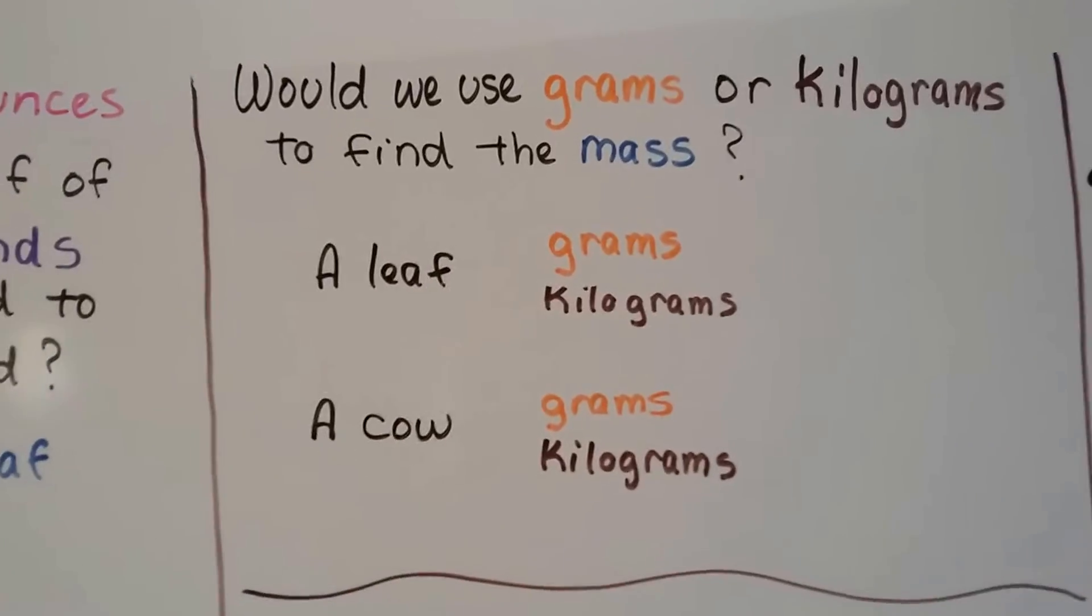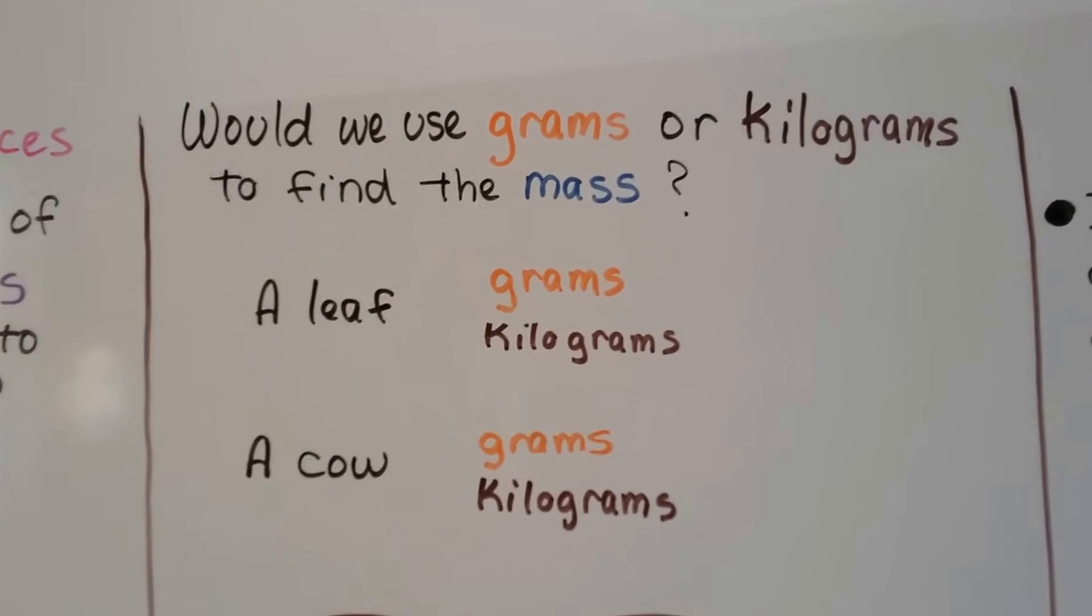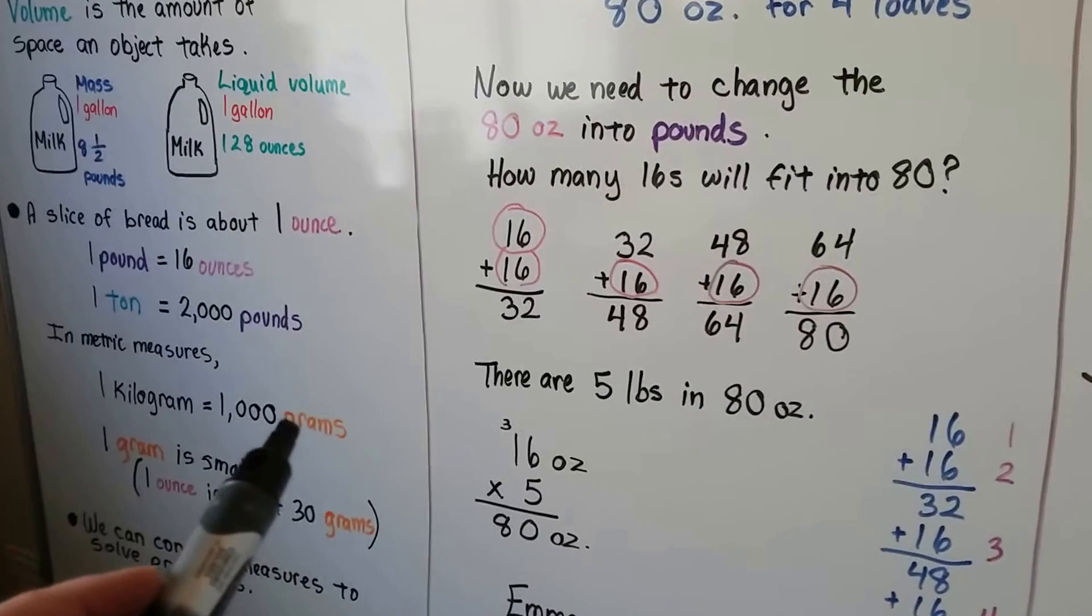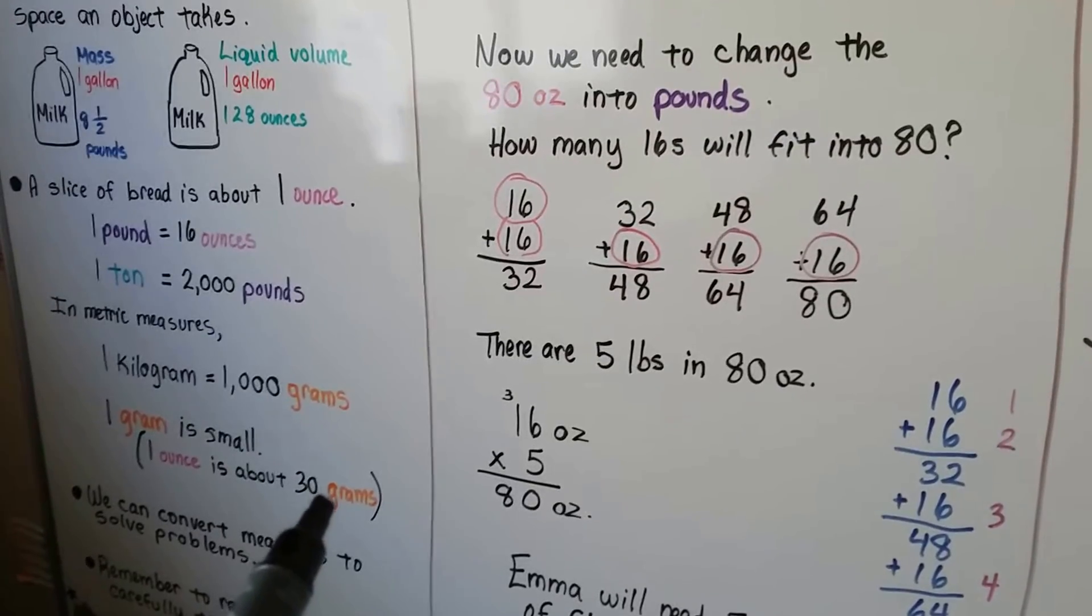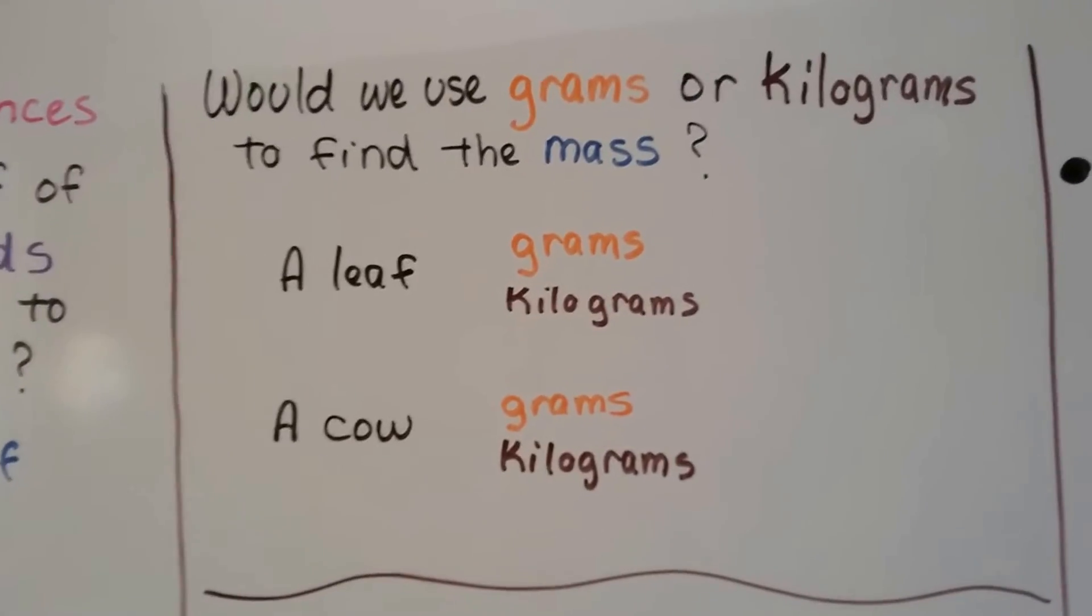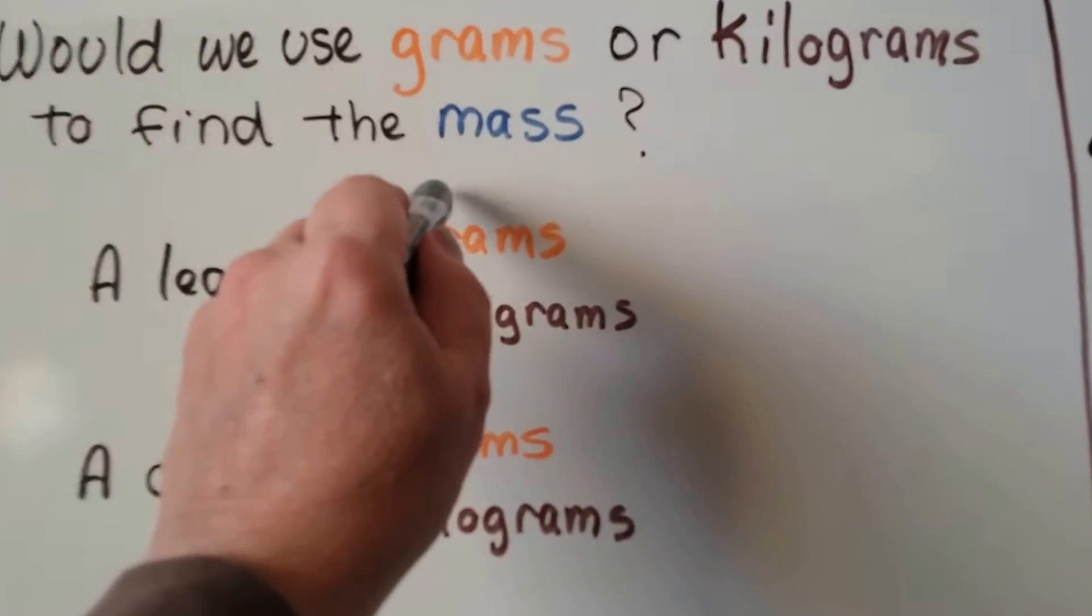Now would we use grams or kilograms to find the mass of a leaf? Remember grams are very small, and 1 kilogram is 1,000 grams. And remember that an ounce is about 30 grams. That would be one slice of bread. So if we compare this, a leaf is very light. They float off of a tree. So if you said grams, you're right, because it wouldn't be very heavy.